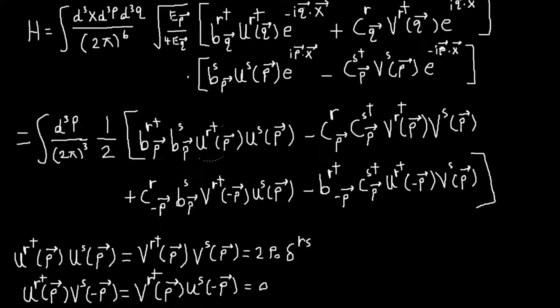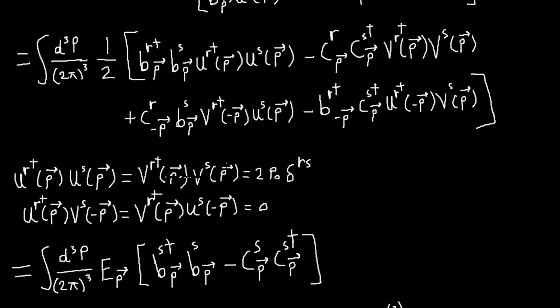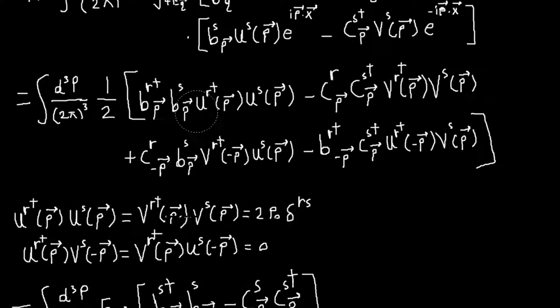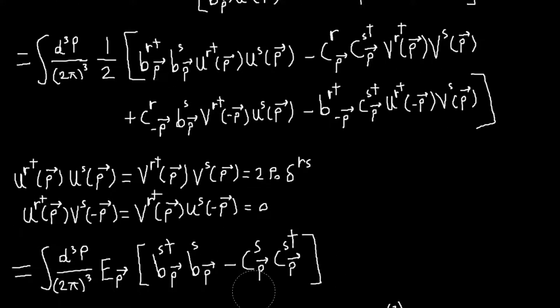And then I can just, yeah, in this term, I get a 2e_p. And then I can replace, so there was an implied sum over both r and s here. So once I have this, the Kronecker delta, I can replace, I can do the sum over, because I did it over r. So all of my r's become s's.